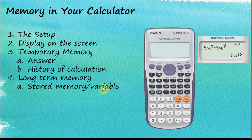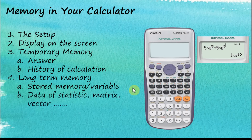In your calculator you can see a few keys with red capital letters: A, B, C, D, E, F, X, Y, and M. These are the buttons where you can store a variable or a number. Another type of long-term memory is the data of statistics, matrix, and vectors. When you perform those calculations, you will be asked to key in data, and that data will be kept in the calculator even though it is switched off. Therefore it is considered long-term memory.